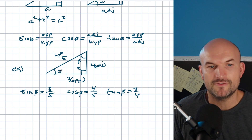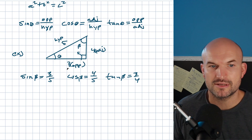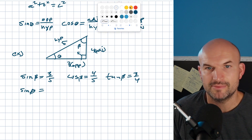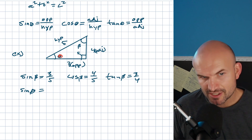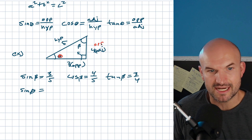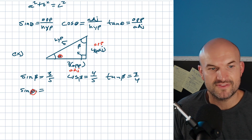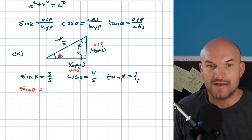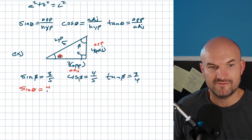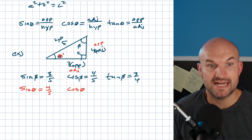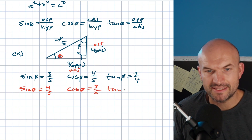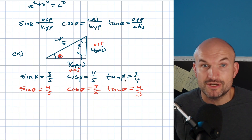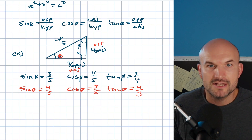Now, my point here is: what if we go back to theta over here? How does that change the relationships? Well, it changes everything. If theta is now this other angle, then this side becomes the opposite side and this becomes the adjacent side. So the sine of theta is opposite over hypotenuse, which is four-fifths. The cosine of theta is adjacent over hypotenuse, which is three-fifths. And the tangent of theta is opposite over adjacent, which is four-thirds. So based on what angle you're referring to — theta or beta — your ratios are going to be completely different.